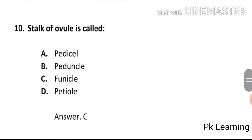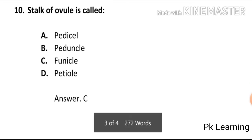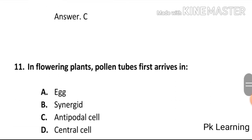The stalk of an ovule is called: A) pedicel, B) peduncle, C) funicle, D) petiole. The answer is C, funicle. The stalk of the ovule is called funicle. C is the correct option.